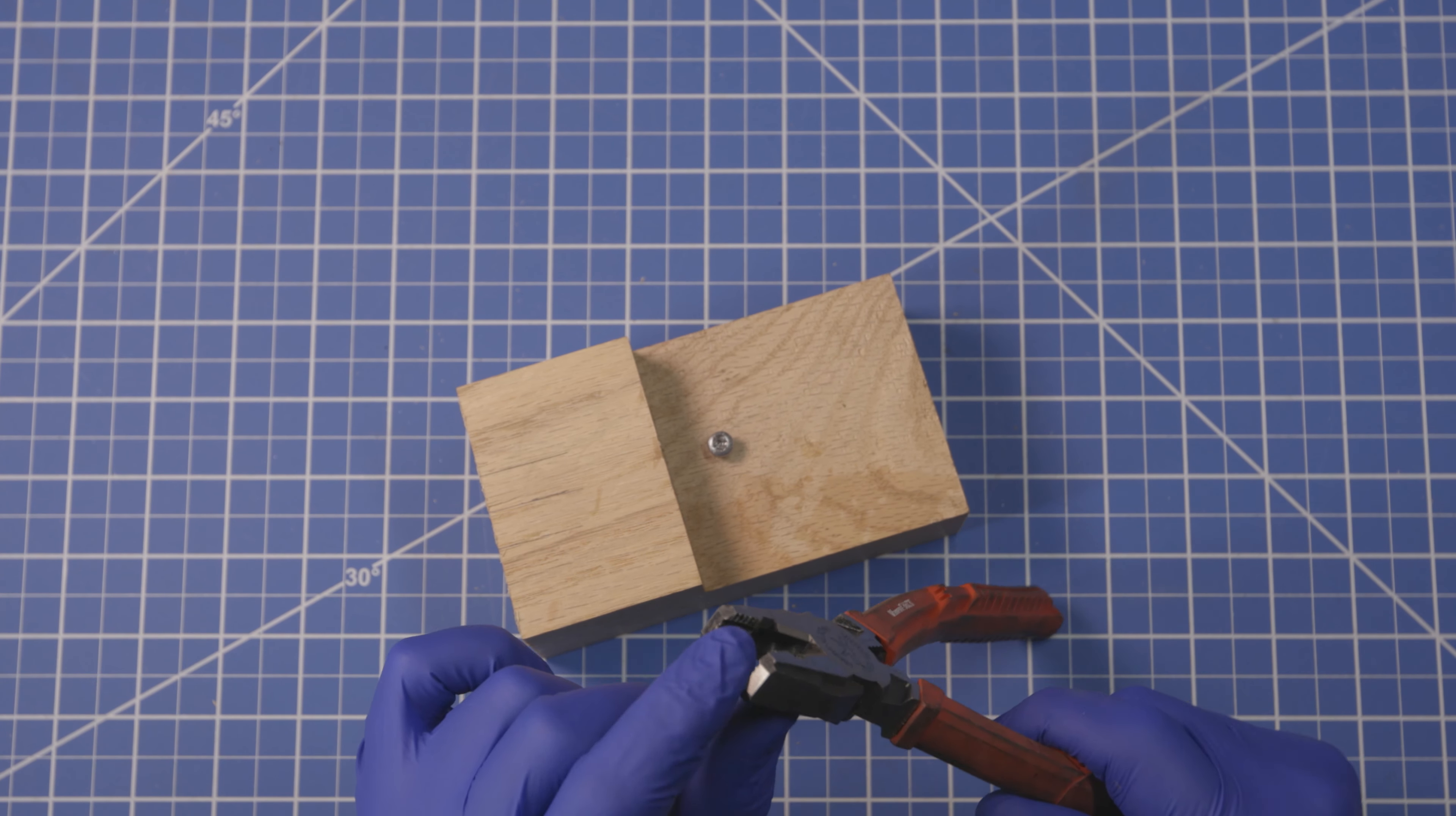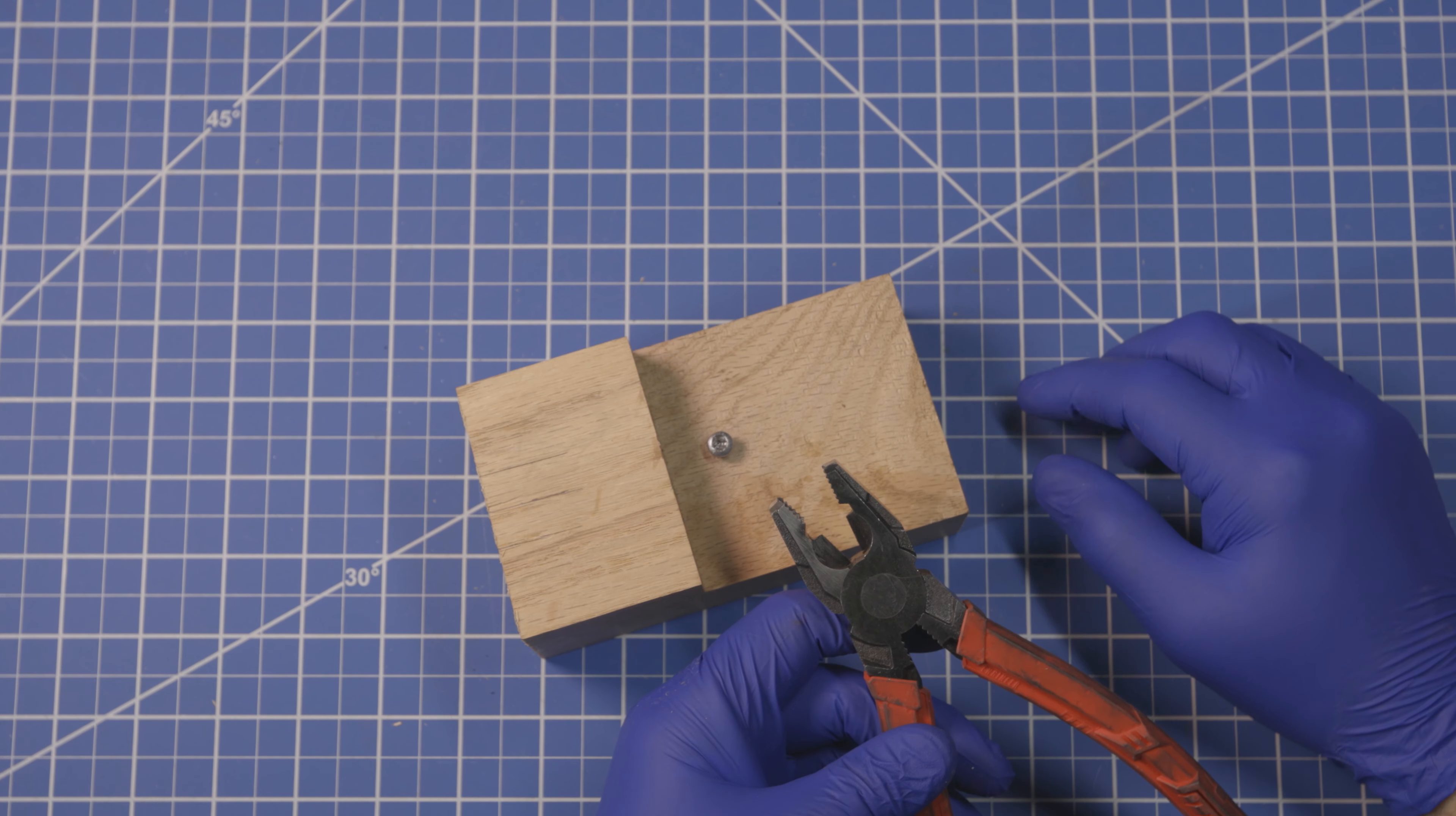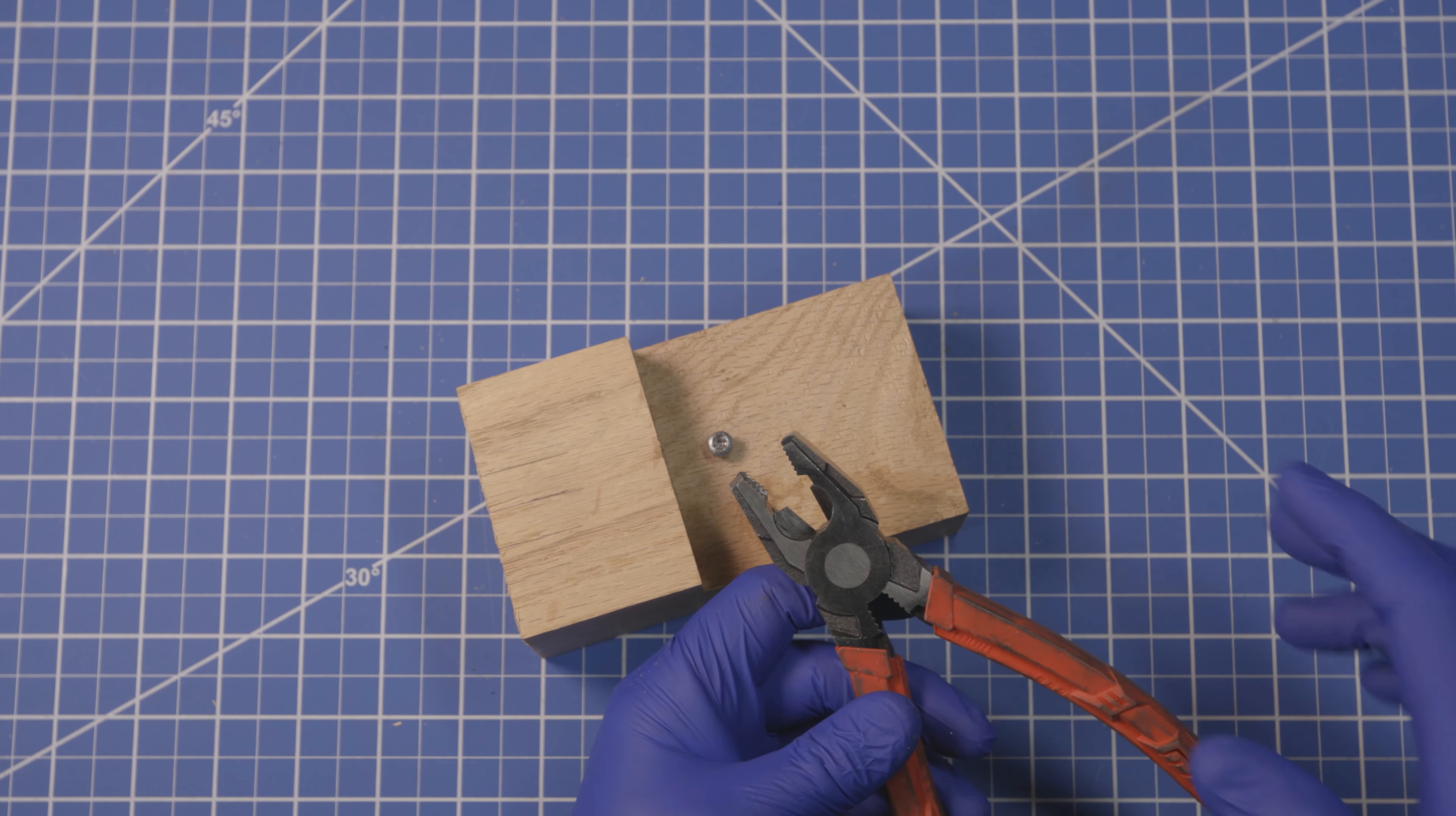The serrations and the whole pliers themselves are hardened steel, so they're able to bite into most metals that you're going to encounter. Even higher grade metals, these can still bite down pretty hard. I think even later versions of this are even higher hardness than these are, but they're still quite hard.